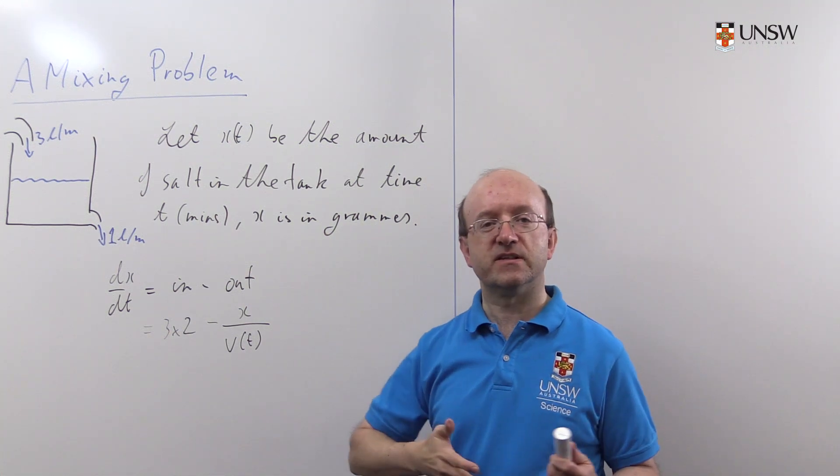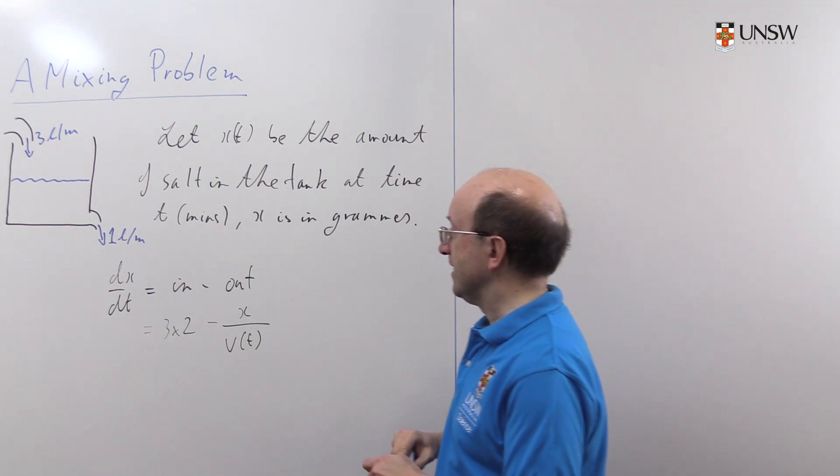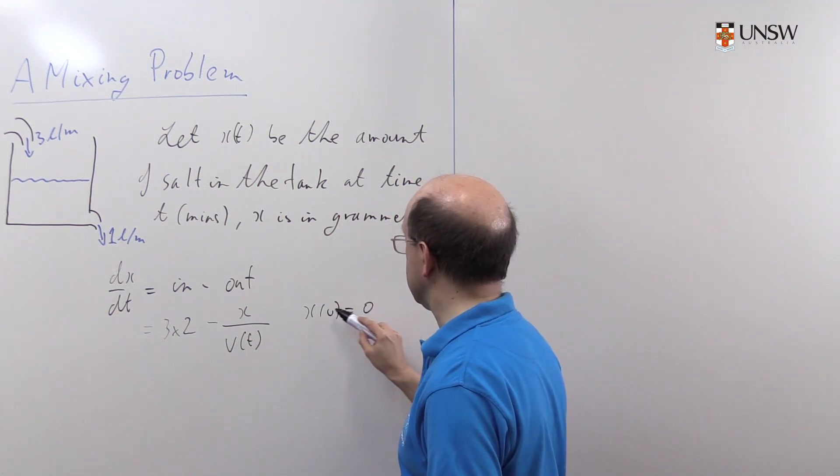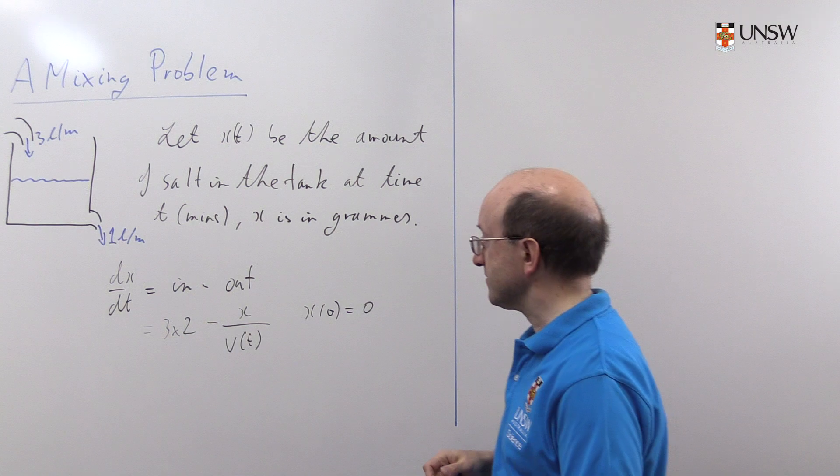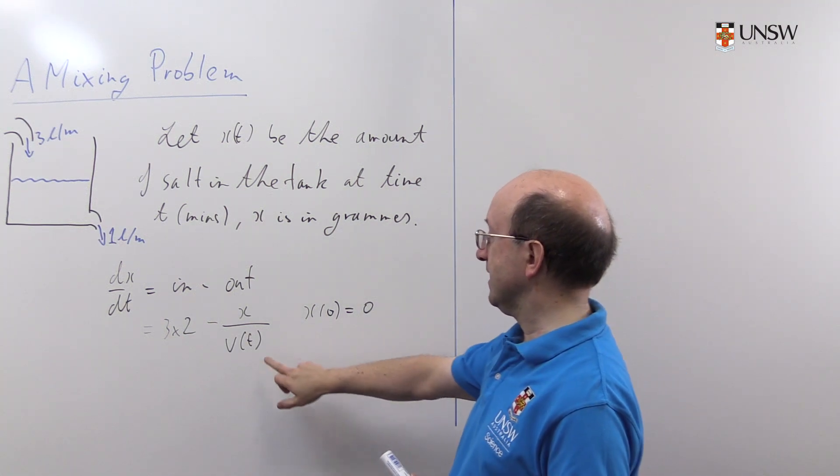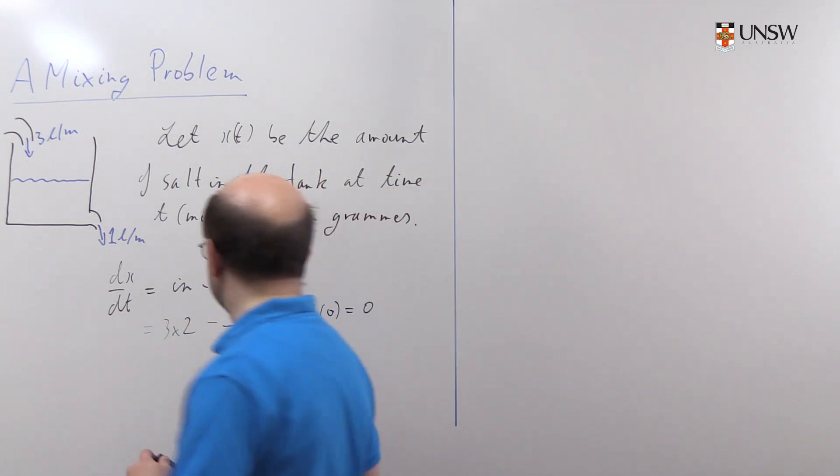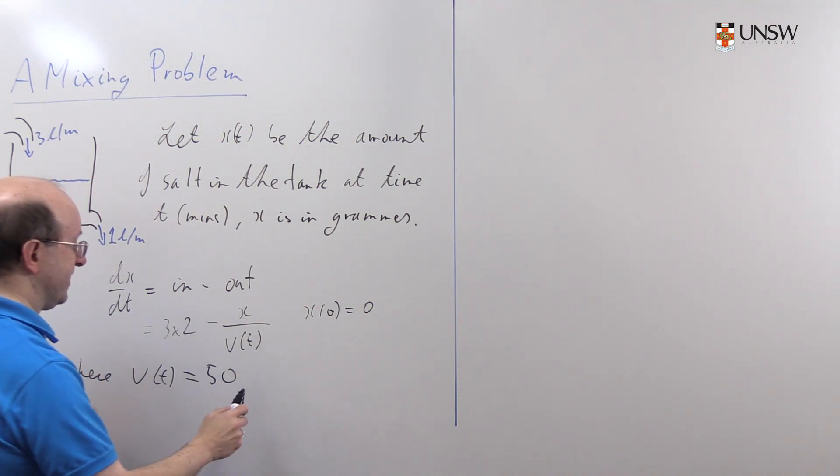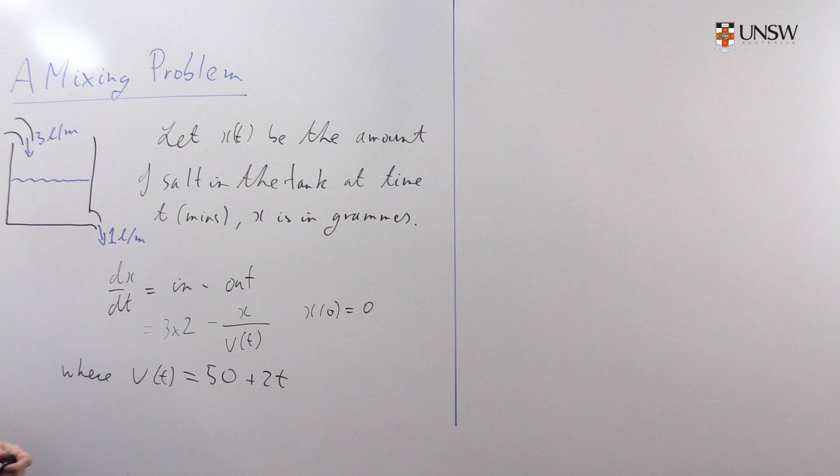And the other thing we know, because these problems are always initial value problems, is how much salt is there in the beginning. Well, we know that we had 50 litres of pure water, so we know that x(0) was zero. There was no salt in the tank when we began. So all we need to do now to set up a differential equation is to write down what the volume would be at time t. Well, we started off with 50 litres. We're running in 3 litres a minute and pouring out 1 litre a minute, so our net gain is 2 litres of fluid a minute. So this is our differential equation: dx/dt is 6 minus x over 50 plus 2t.